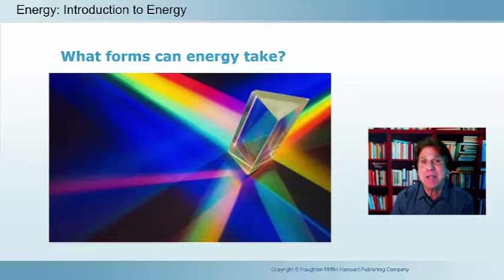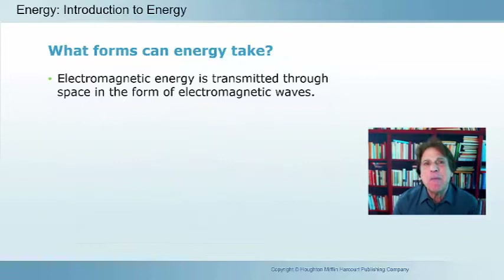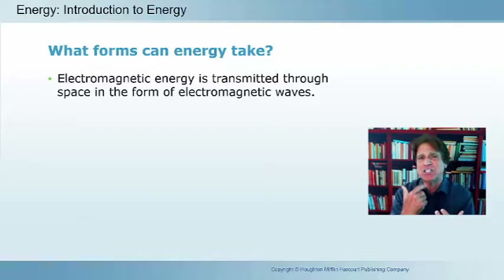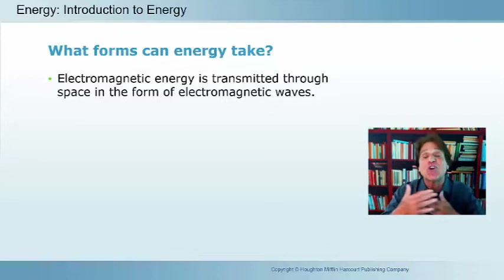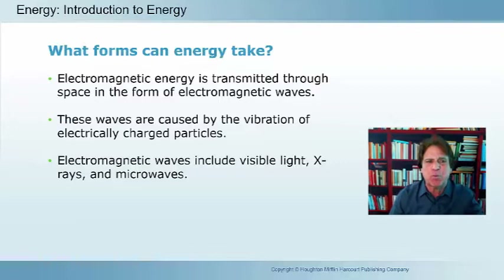Light energy is another form — electromagnetic energy. We can see light being split into component colors forming the visible spectrum. Unlike other forms of energy, electromagnetic energy can be transferred through the vacuum of space — you don't need particles. Light from the sun travels this great distance to bathe our planet. The waves of electromagnetic radiation are caused by vibration of charged particles and include visible light, X-rays, and microwaves.